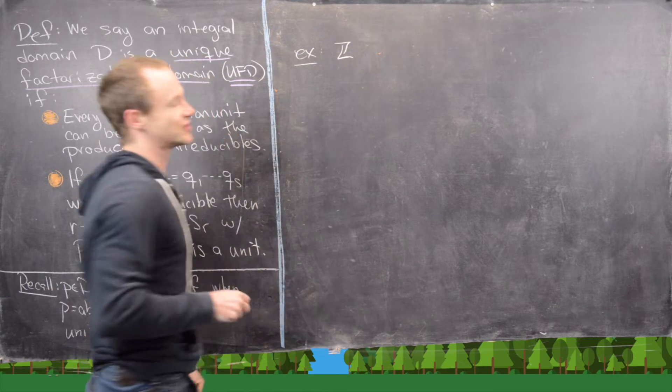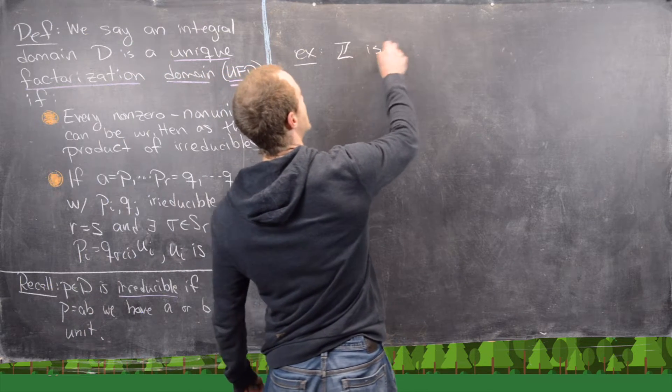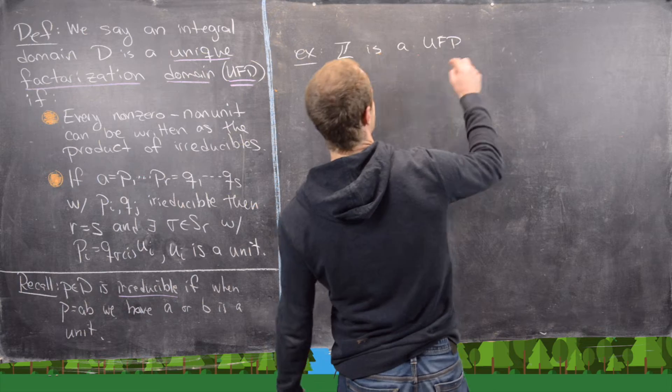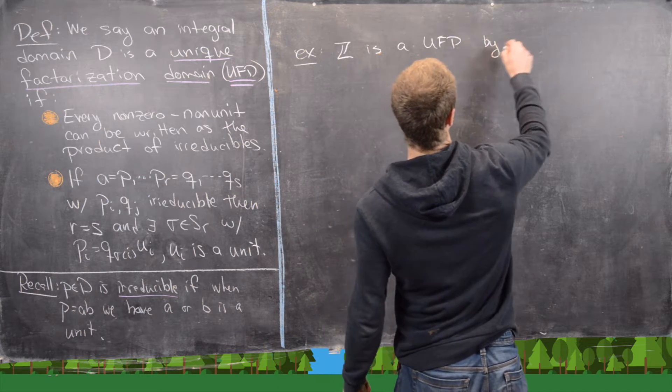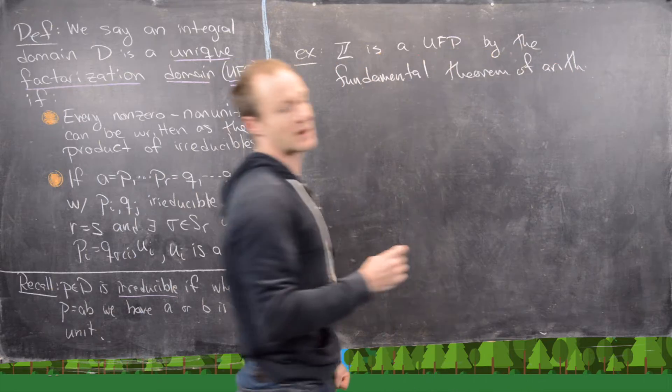So the integer Z is a unique factorization domain. We know that because of the fundamental theorem of arithmetic.